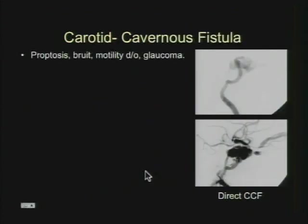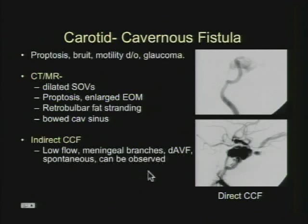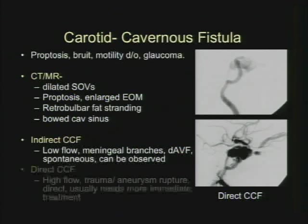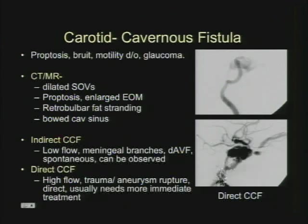Carotid-cavernous fistula patients can present with visual findings and loss of vision, and also findings related to the cavernous sinus. Classic cross-sectional imaging features include dilated superior ophthalmic vein, enlarged extraocular muscles, retrobulbar stranding, and a bowed cavernous sinus. Cavernous carotid fistulas can be indirect — normally low flow, involving meningeal branches, these are dural arteriovenous fistulas. Spontaneous lesions can be observed if asymptomatic. Whereas direct CC fistulas, often the sequela of trauma or aneurysm rupture, usually need more immediate treatment. Here's an example of a direct CC fistula showing from frontal and lateral projections a large area of contrast extravasation into the cavernous sinus, out the superior ophthalmic vein and inferior petrosal sinus.